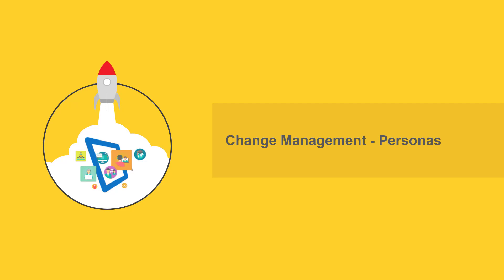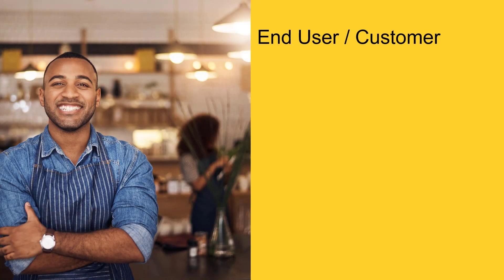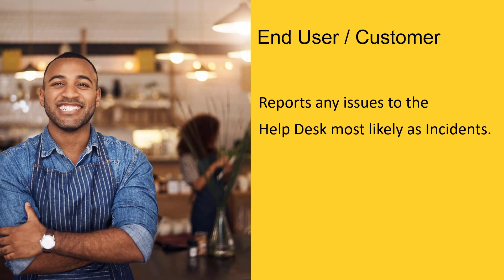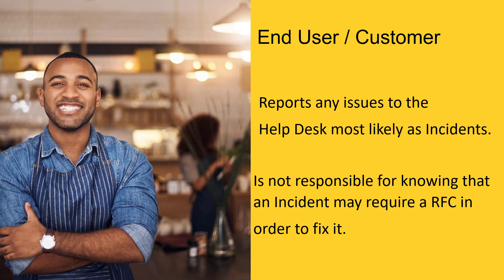Let me enumerate the most common personas and explain their role in this process. The end user is the first persona — he is the affected one, but he doesn't know that his reported incident actually requires a request for change in order to address it. Don't rush into blaming the end user for not being aware of the necessity of a change request; after all, he just wants his issue to be fixed as soon as possible.